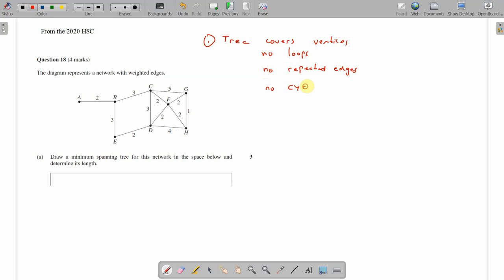Then a spanning tree does all this but covers every vertex. And then a minimum spanning tree does all this with the least total weight possible, least total weight.